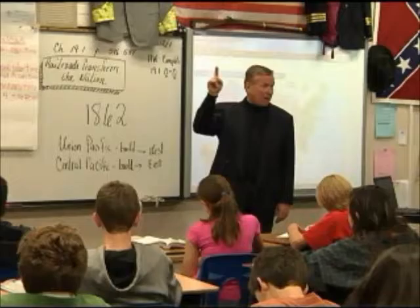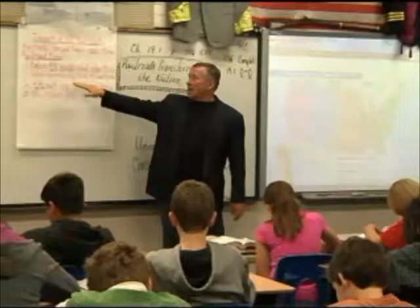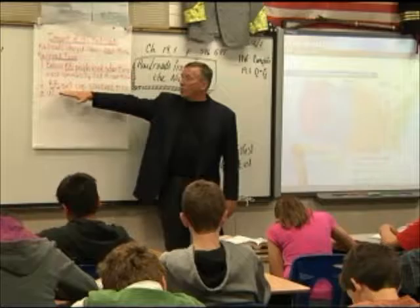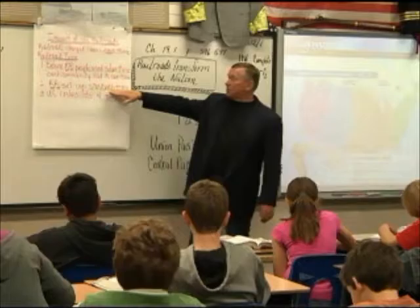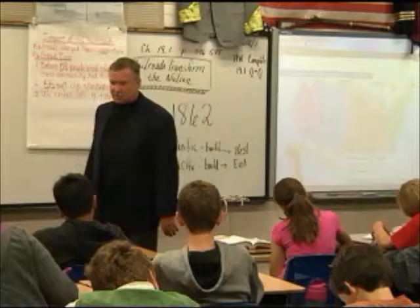Before railroads, people used solar time. When the sun was straight up, it was 12 o'clock noon. They used solar time, and each community had its own time, whenever the sun was straight up. Railroads set up standard time. The United States was broken into four time zones.